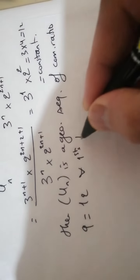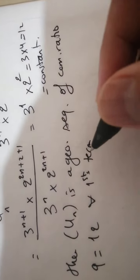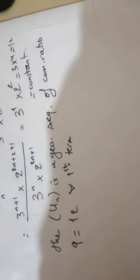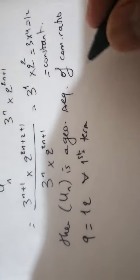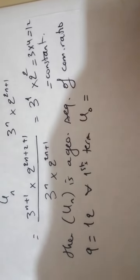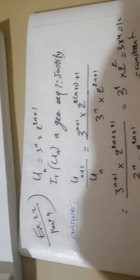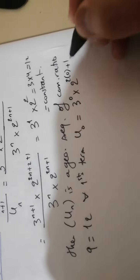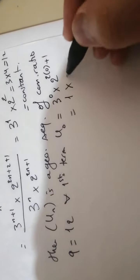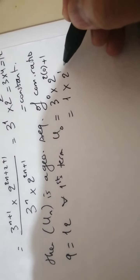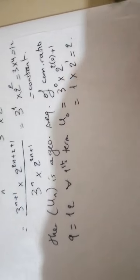And first term is called U-Zero. From the question we know that the first term U-Zero equals 3 power zero times 2 power two times zero plus one. This is 1 times 2 power 1, which equals 2. Thank you very much.